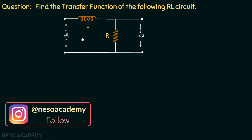The RL circuit is given to us. The input to this circuit is V(t). The output is taken across the resistor, which is Vout(t). The inductance of the inductor is equal to L, and the resistance of the resistor is equal to R. We need to find out the transfer function.